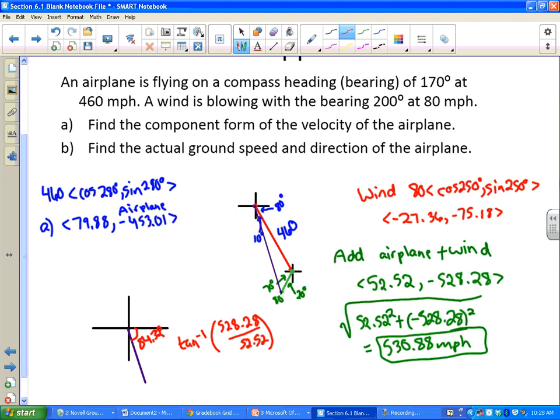But what I want is the angle from zero to here. So that's 90 plus 84.32, so that is 174.32. So that's the angle that we end up with.